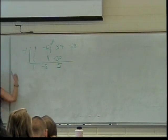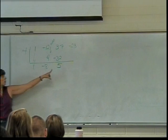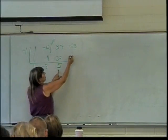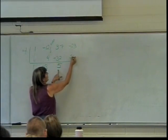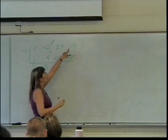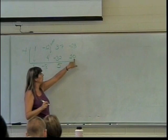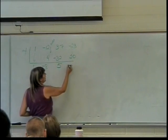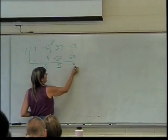Then 4 times 5 is 20. I write that down under the negative 23. I add negative 23 and 20 and get negative 3.